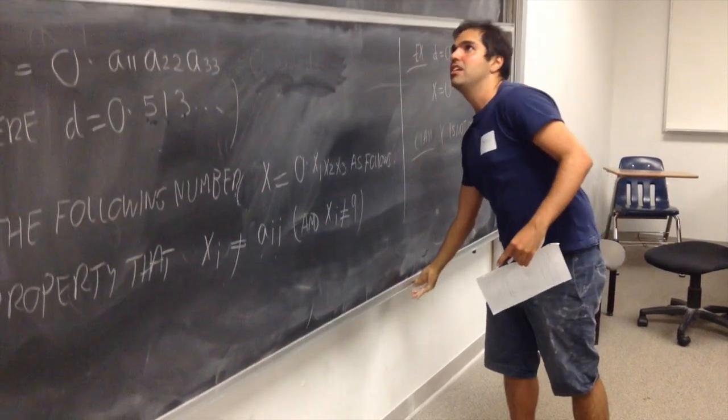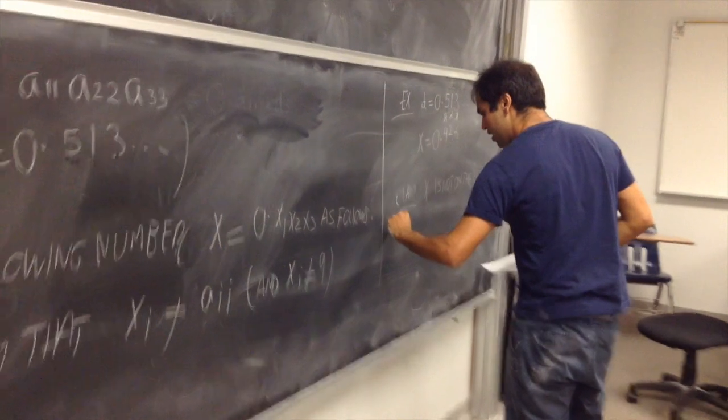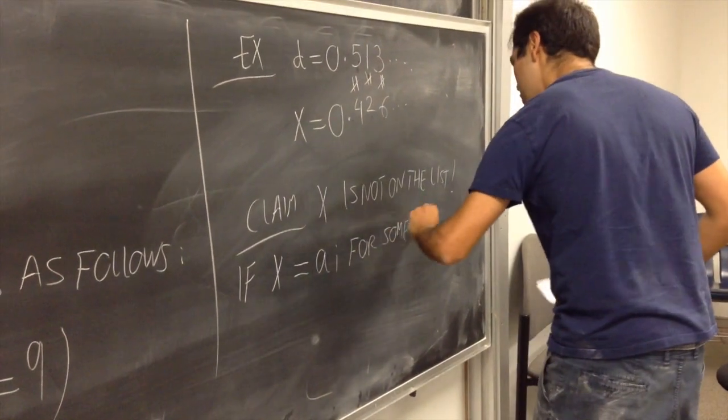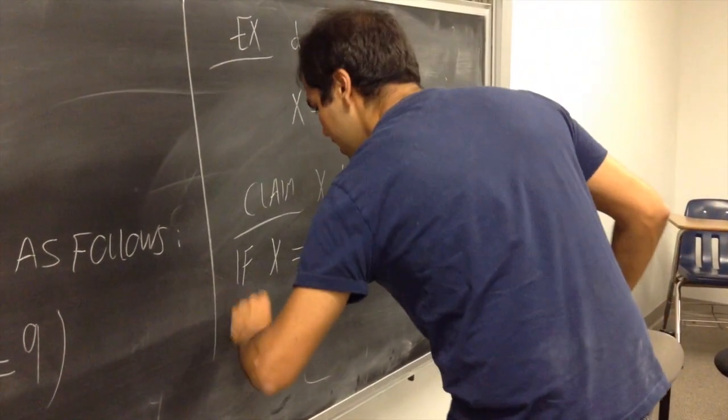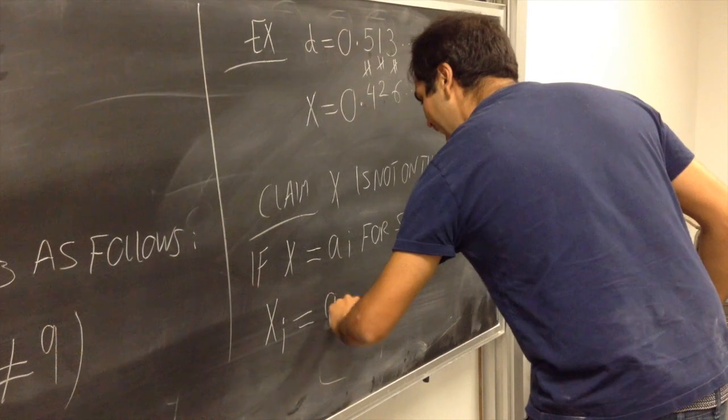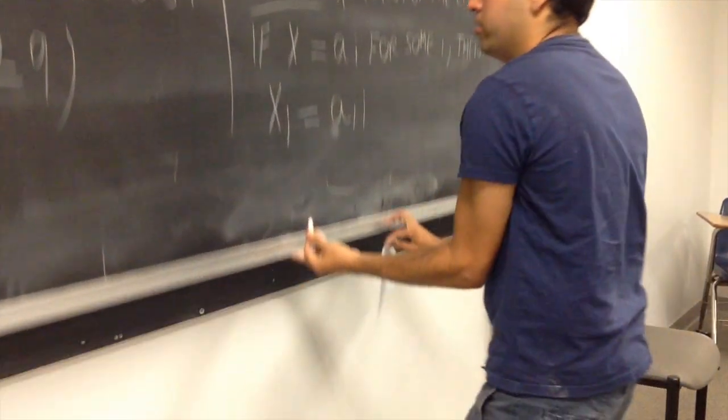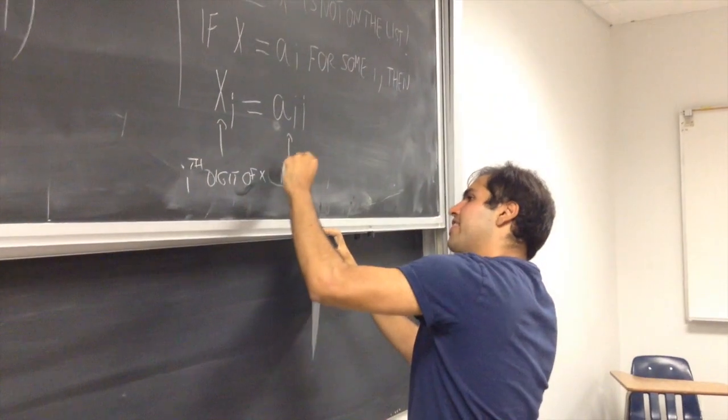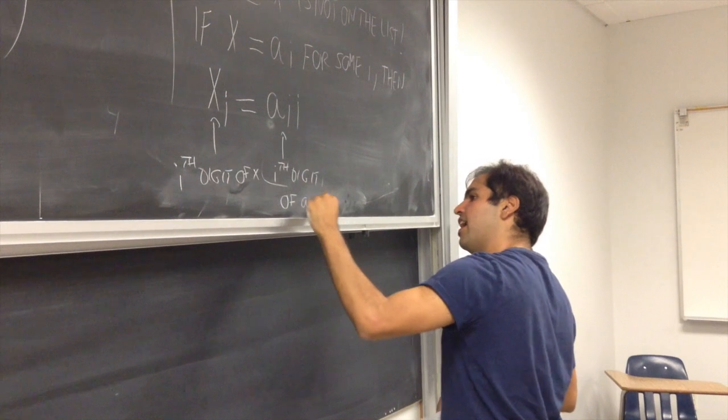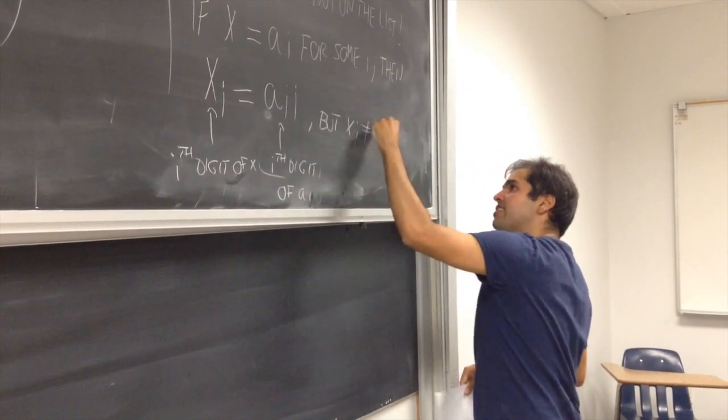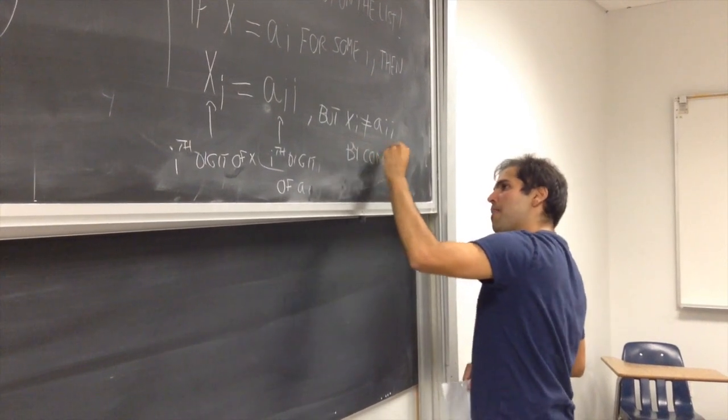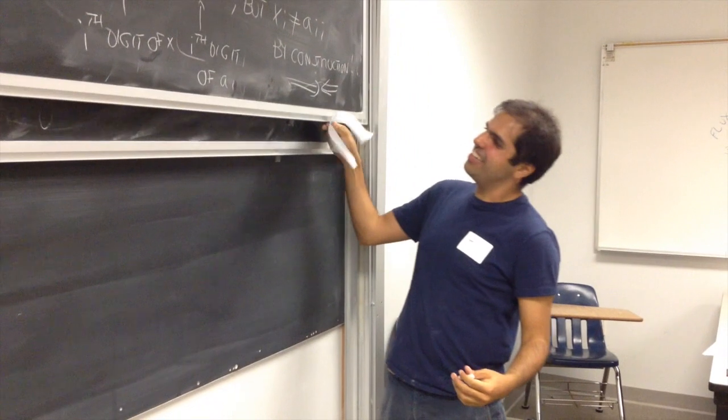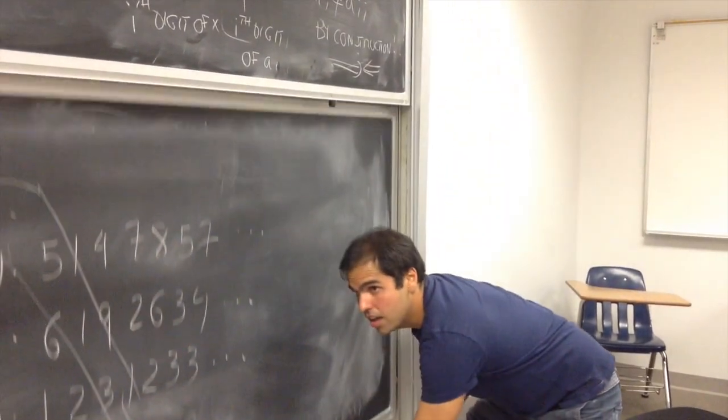That's basically this. So, now, if x is equal to ai for some i, then, as I said, the i-th digit of x would be equal to the i-th digit of ai. So, i-th digit of ai, but xi is not equal to aii by construction. And, that's our contradiction. So, we write those two arrows for contradiction. And, then, we're done.